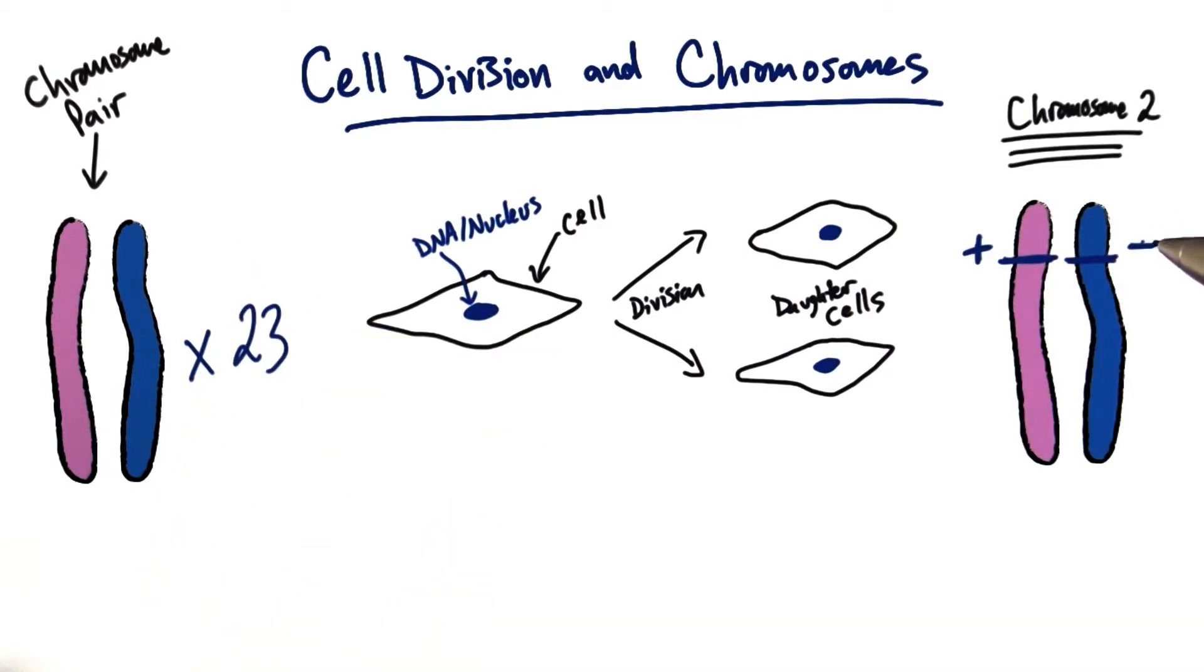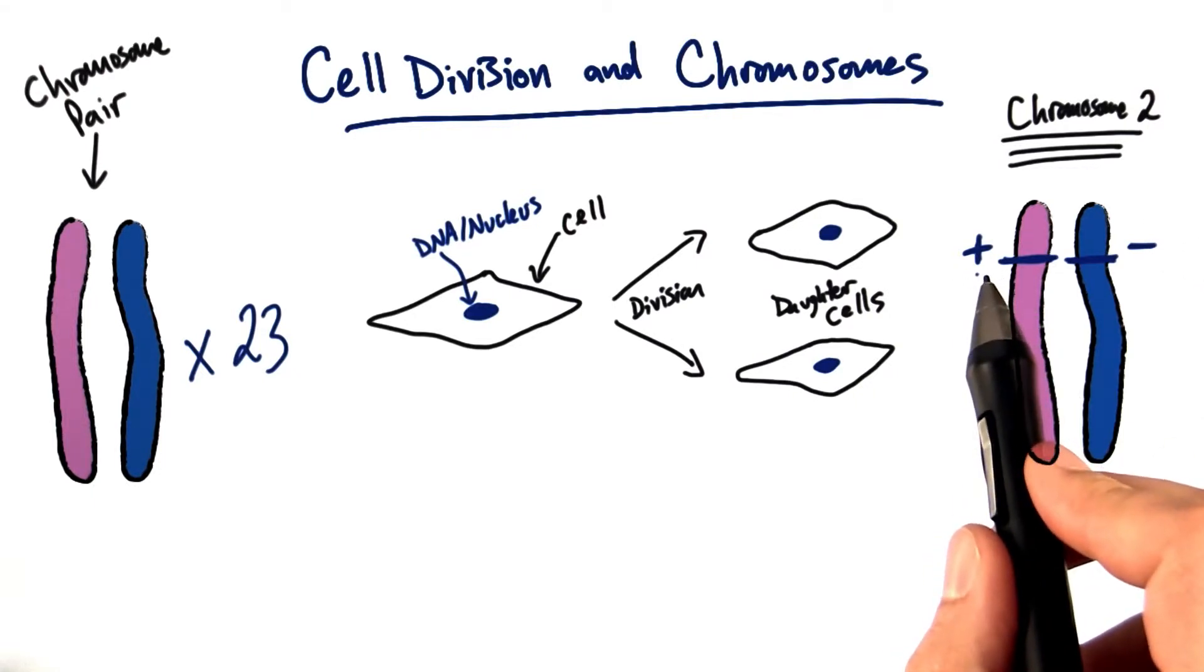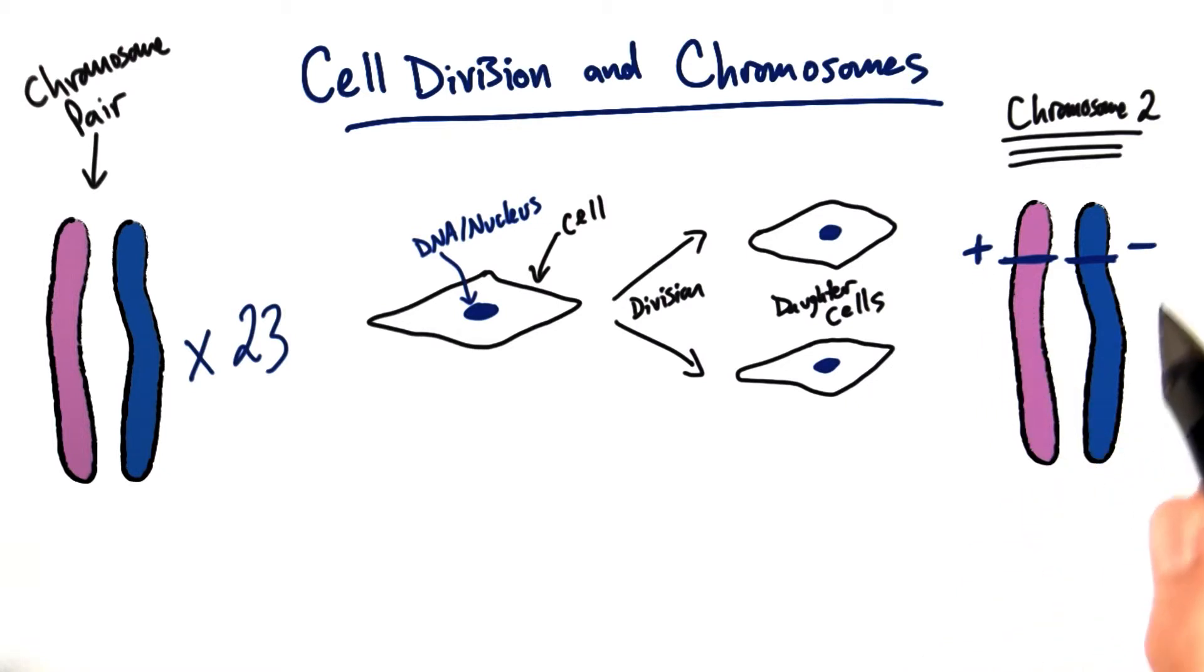Let's say I'm heterozygous for the trait of lactose metabolism. What this means is I have one chromosome with a dominant allele for lactase persistence, and I have another chromosome with a recessive allele for lactase non-persistence. So this means that this cell and every other cell in my body is heterozygous.